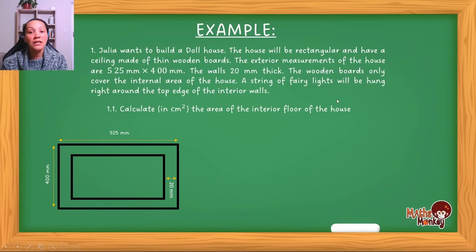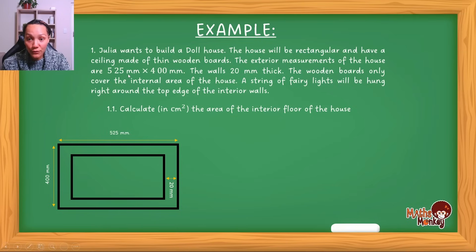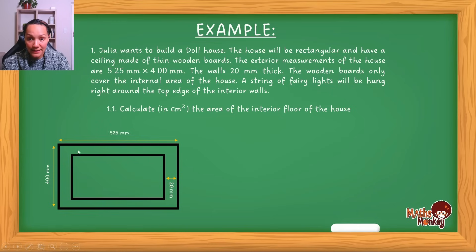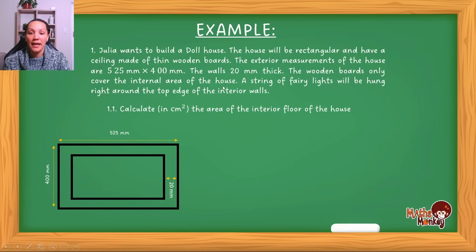Julia wants to build a dollhouse. The house will be rectangular and have a ceiling made of thin wooden boards. The exterior measurements of the house are 525 millimeters by 400 millimeters. The walls are 20 millimeters thick. The wooden boards only cover the internal area of the house.